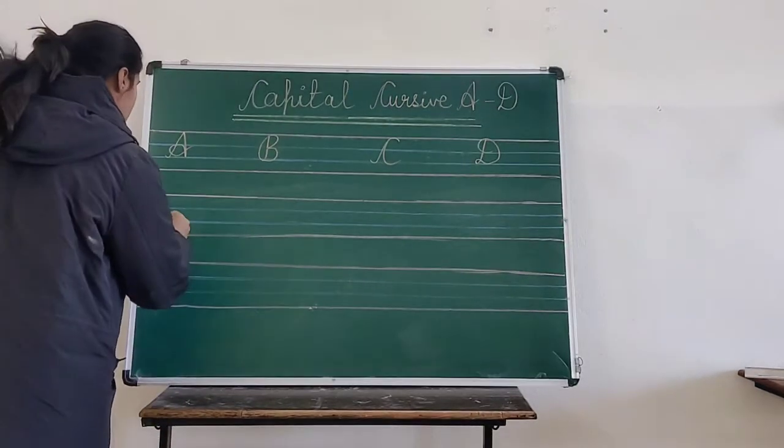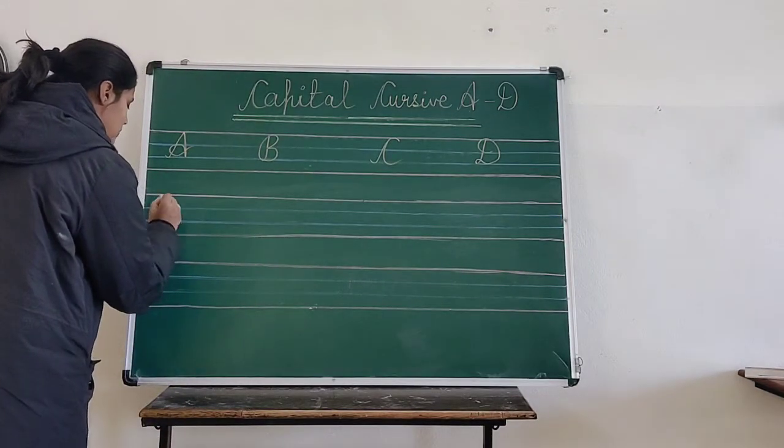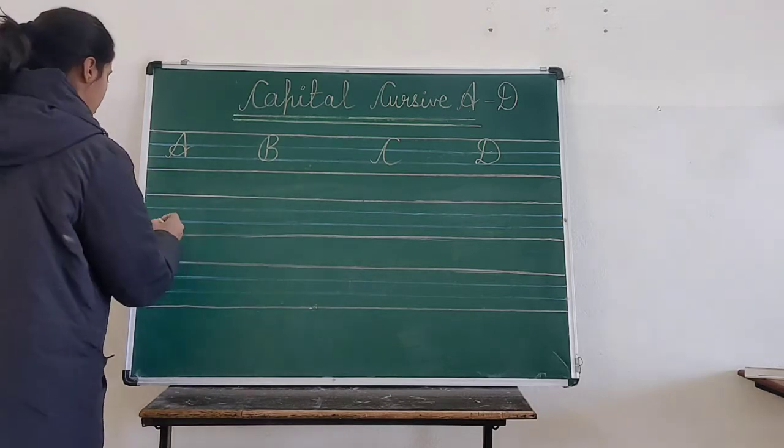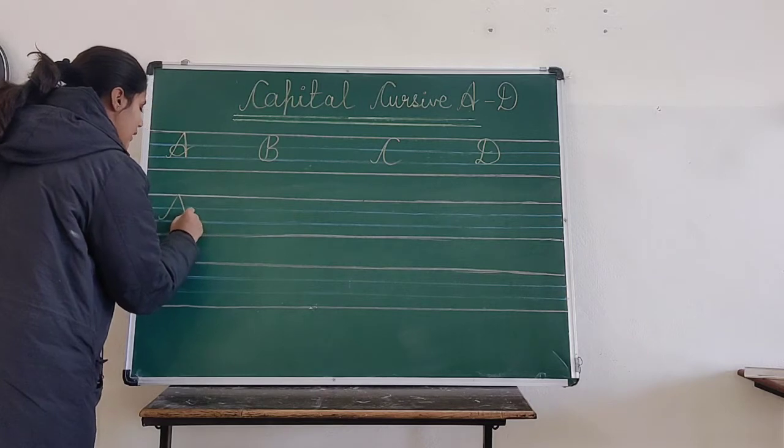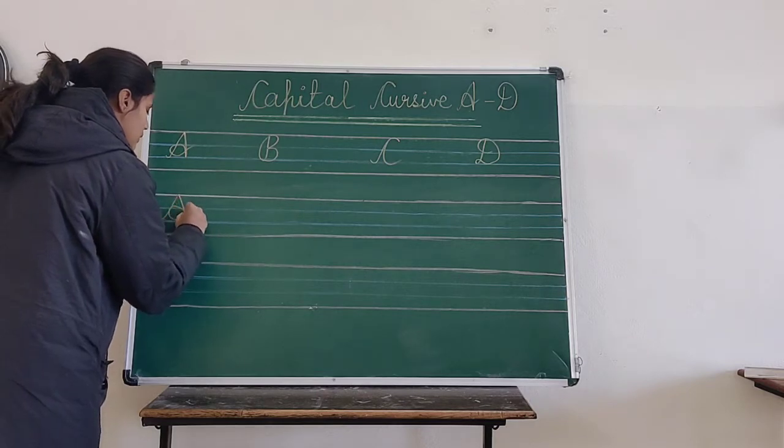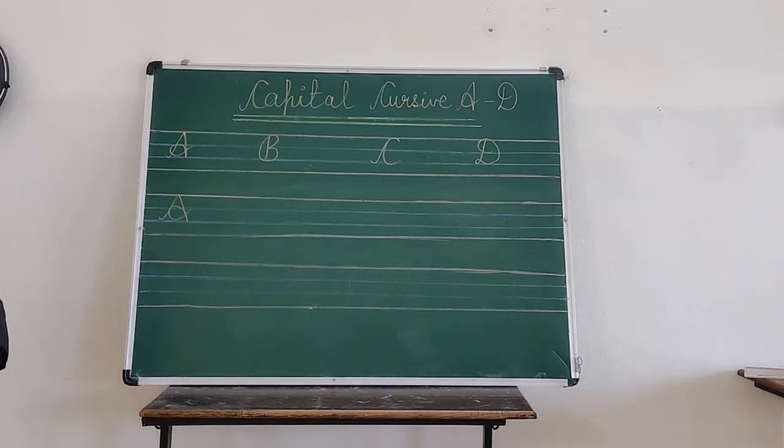Let's learn how to write. First you have to make a small curve. Then you have to make one slanted line, another slanted line, and make one circle. And that's all.